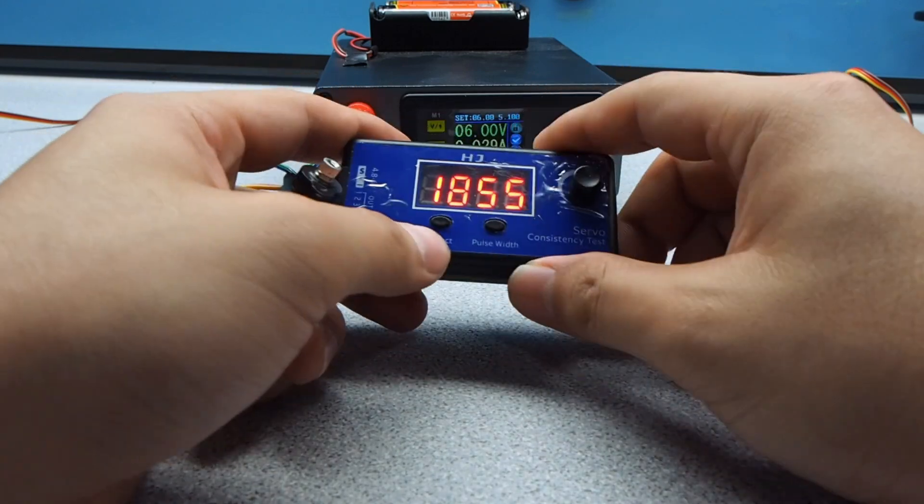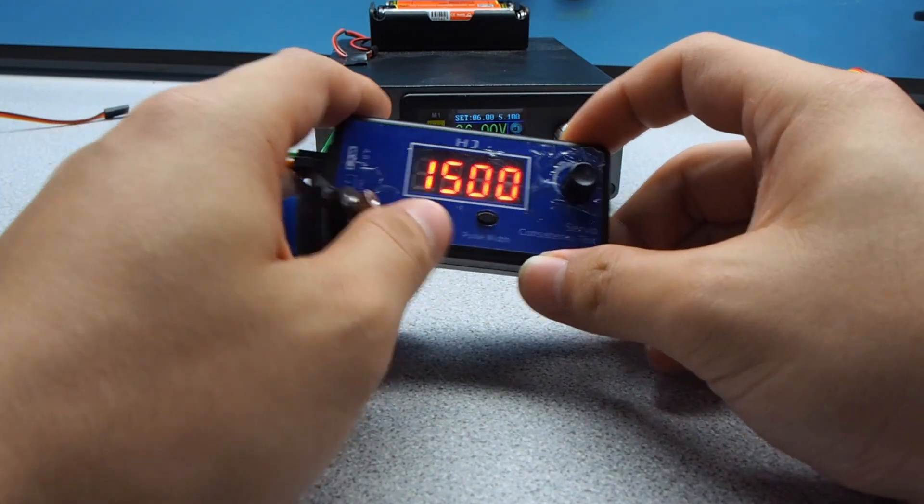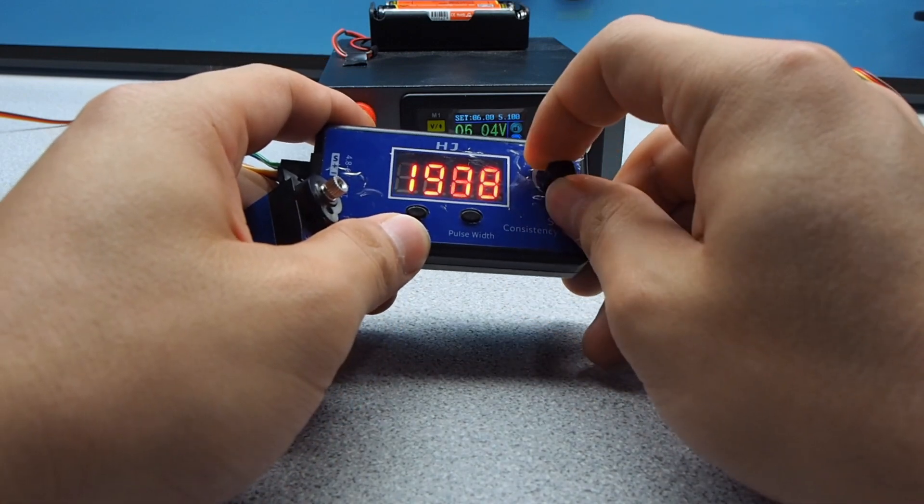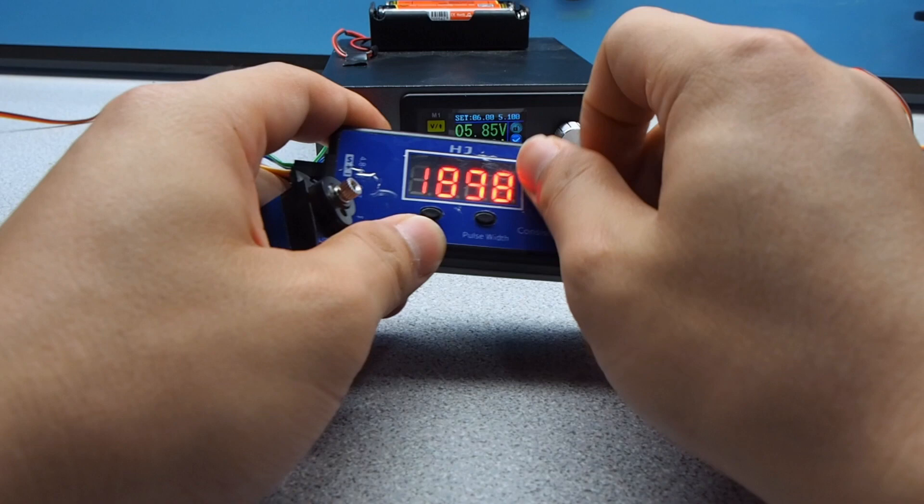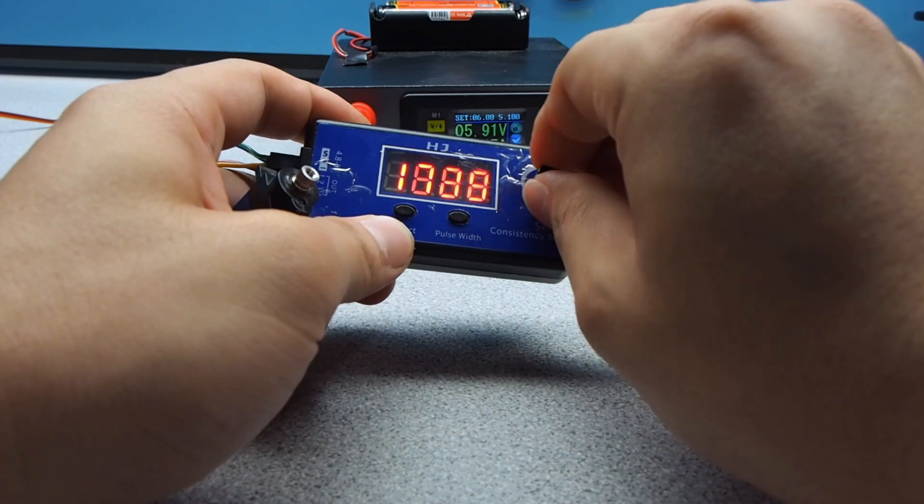So this signal generator has multiple functions, such as setting the middle point, adding a scanning PWM signal, and you can tune the speed. And you can set the signal by hand.